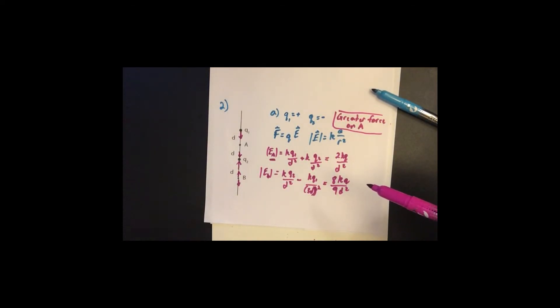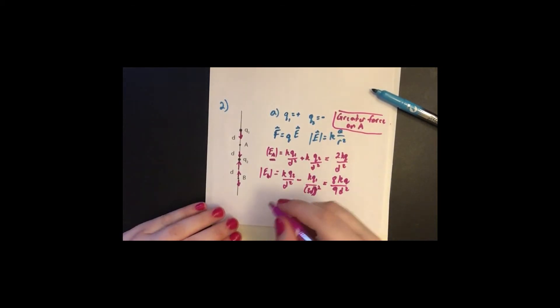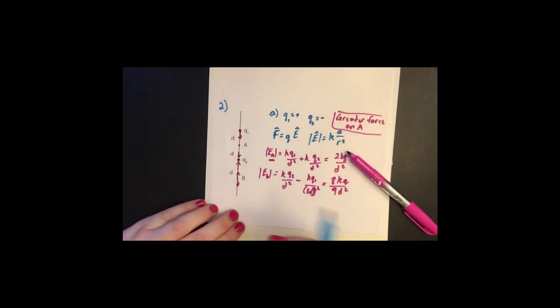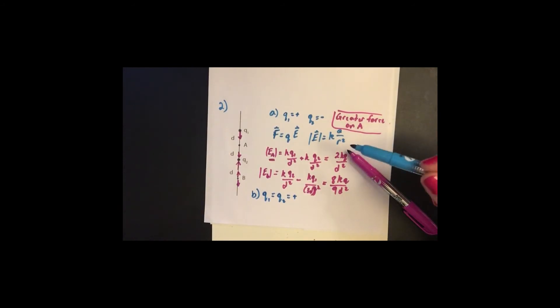Alright, so if now Q1 and Q2 are both positive, would your answer for part A change? If Q1 and Q2 are both positive, so for part B, we want to say Q1 equals Q2 equals positive, does our answer change? Well, now if we look at the fields,